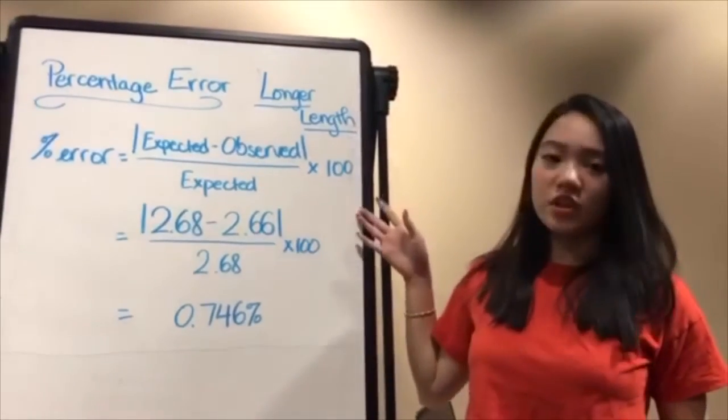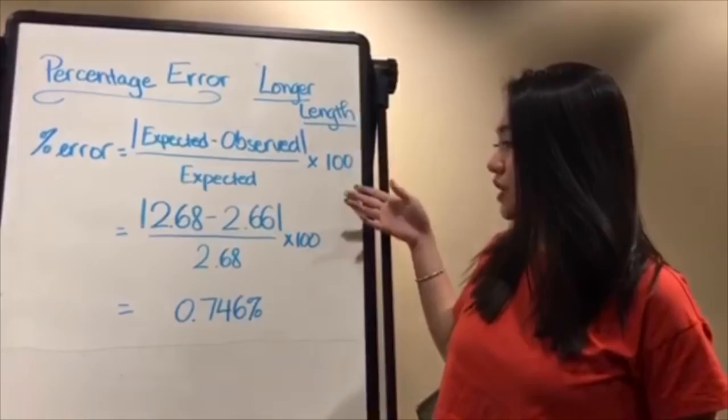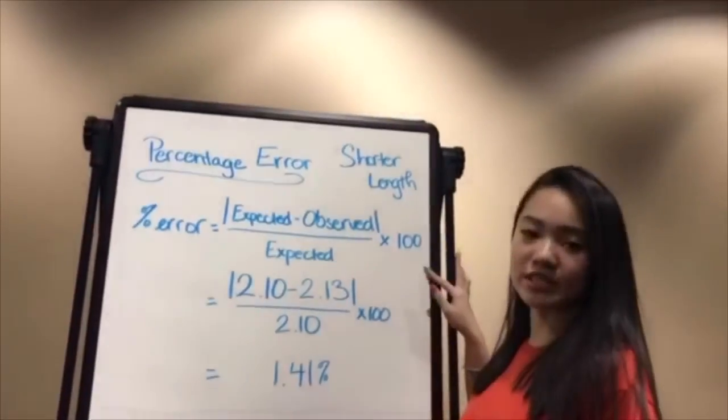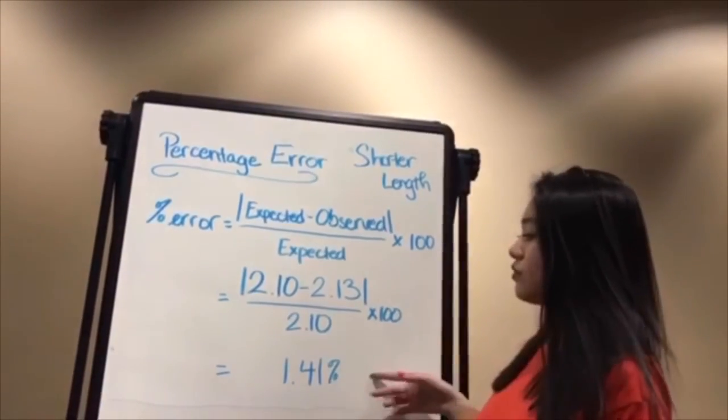For the percentage error of the longer chain length, we used this equation and found 0.746 percentage error. For the shorter chain, we found 1.41 percent.